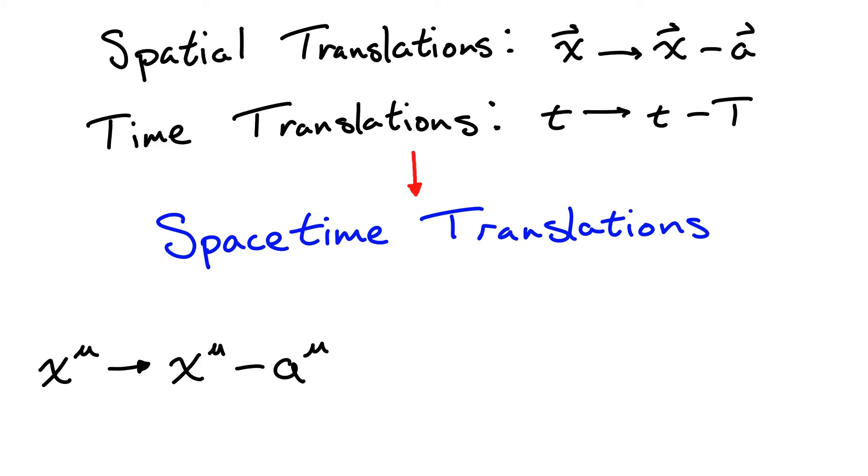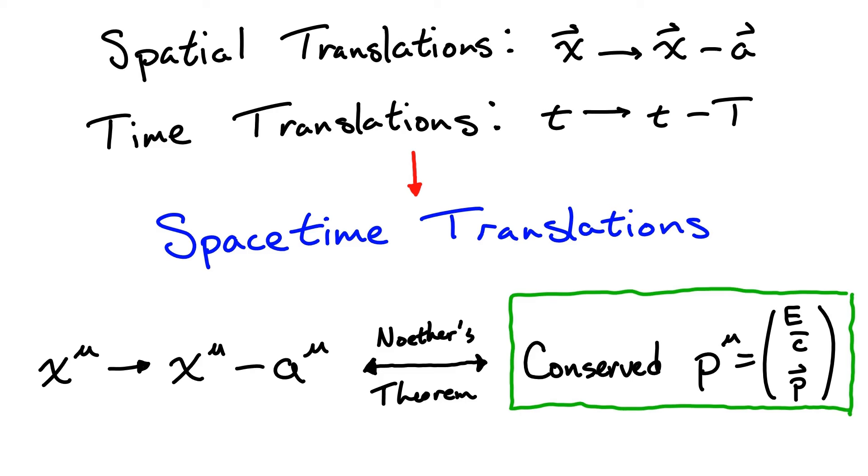The result of symmetries under such translations is a conserved 4-momentum where the time component corresponds to the energy, divided by the speed of light for units, and the spatial component is just the standard 3-momentum. We're not quite there, we still need to find an expression for this 4-momentum in order to solve for the energy. We may be tempted to just take a time derivative of our spacetime position and multiply by mass like we do in Newtonian mechanics, but we need to be very careful here.